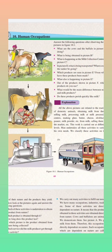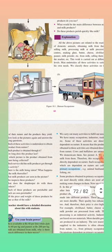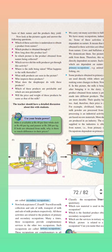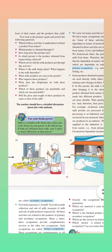Dear students, in online class 6 standard geography lesson 10, human occupation. In this video we are going to continue our lesson, page number 61. Here we are going to study 'use your brain power': milk is available at rupees 40 per liter, while dahi is rupees 60 per kg and paneer is rupees 200 per kg.